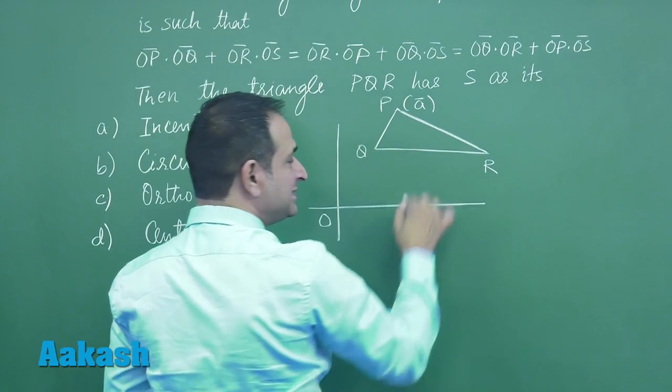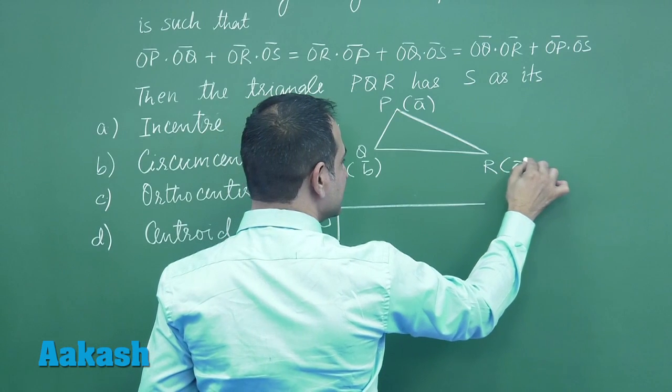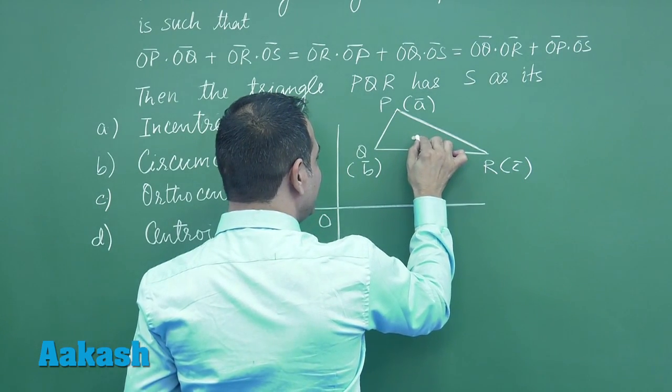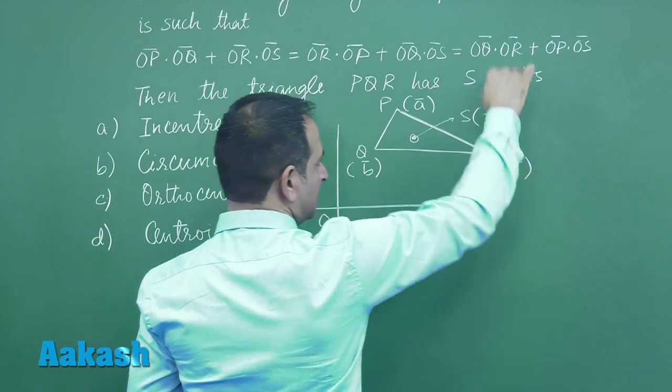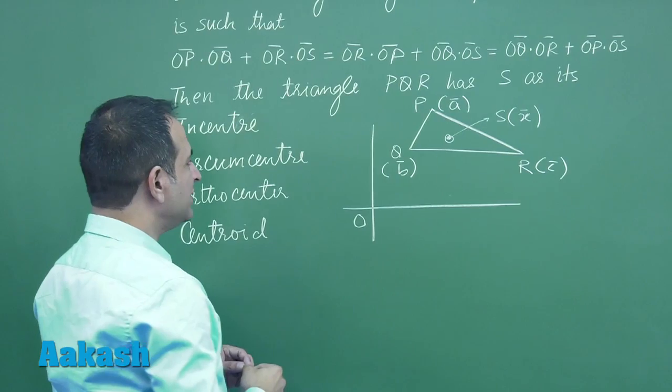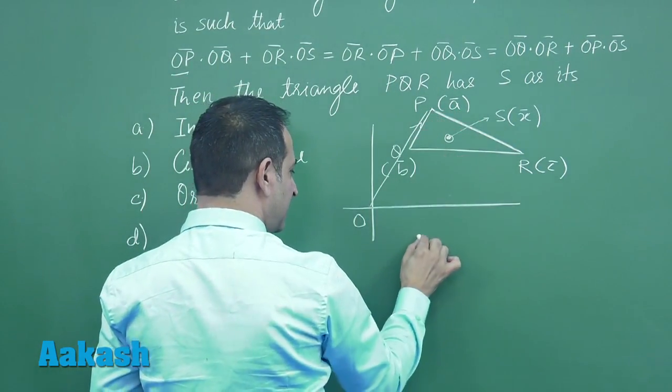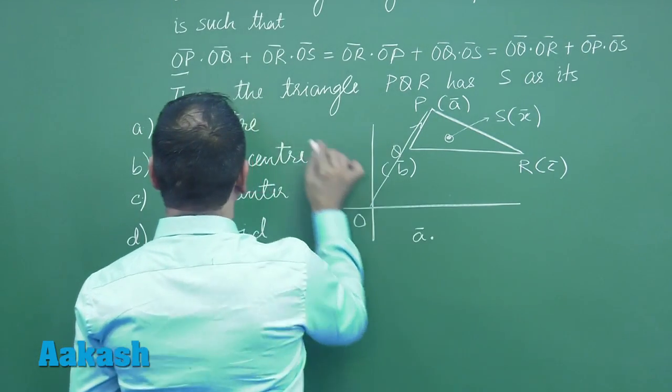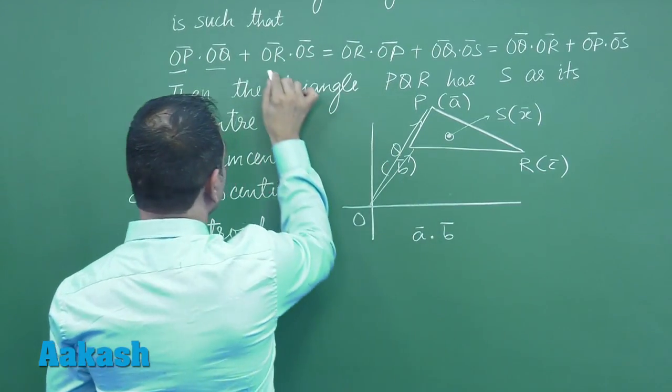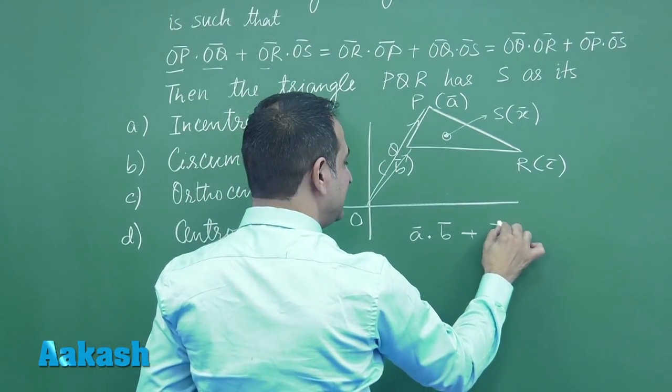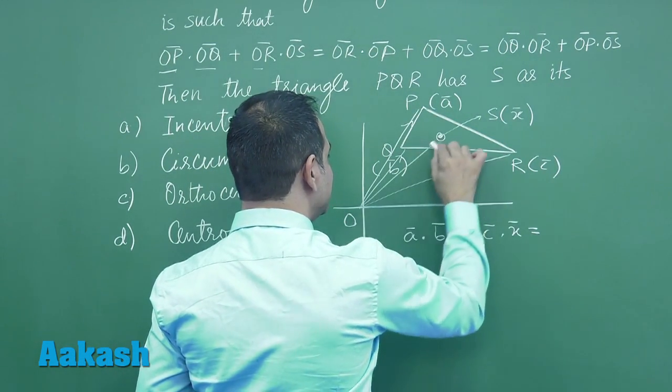Now the position vector of P is, let us say, a. This is b and this is c. S is somewhere here - let us say S is here with position vector x. Now O is the origin. Now what is OP? OP is actually vector a.